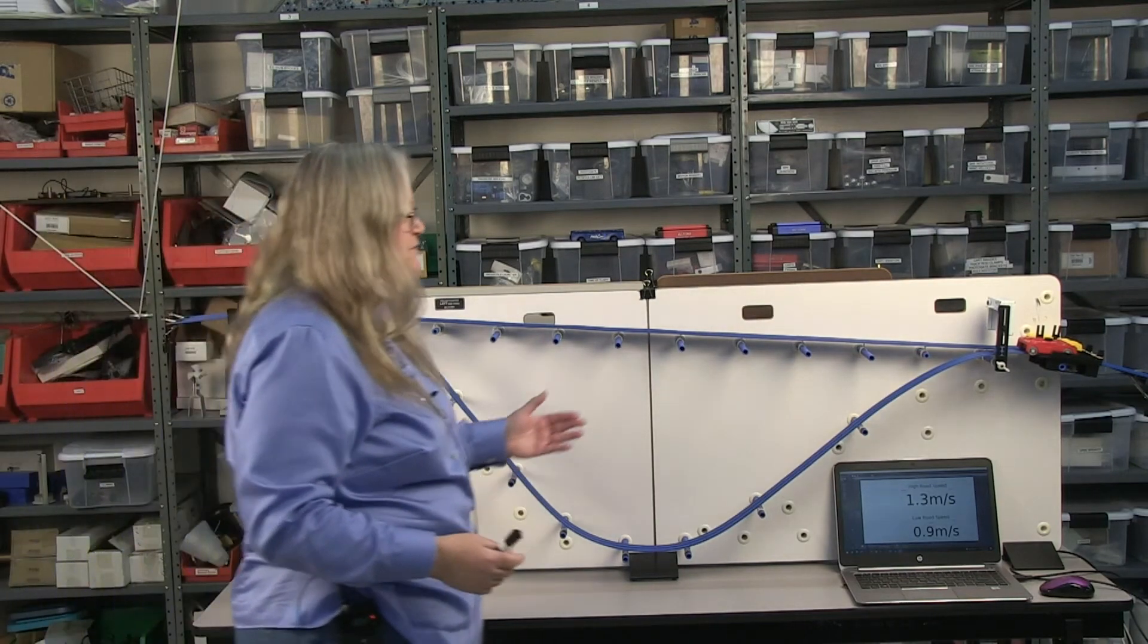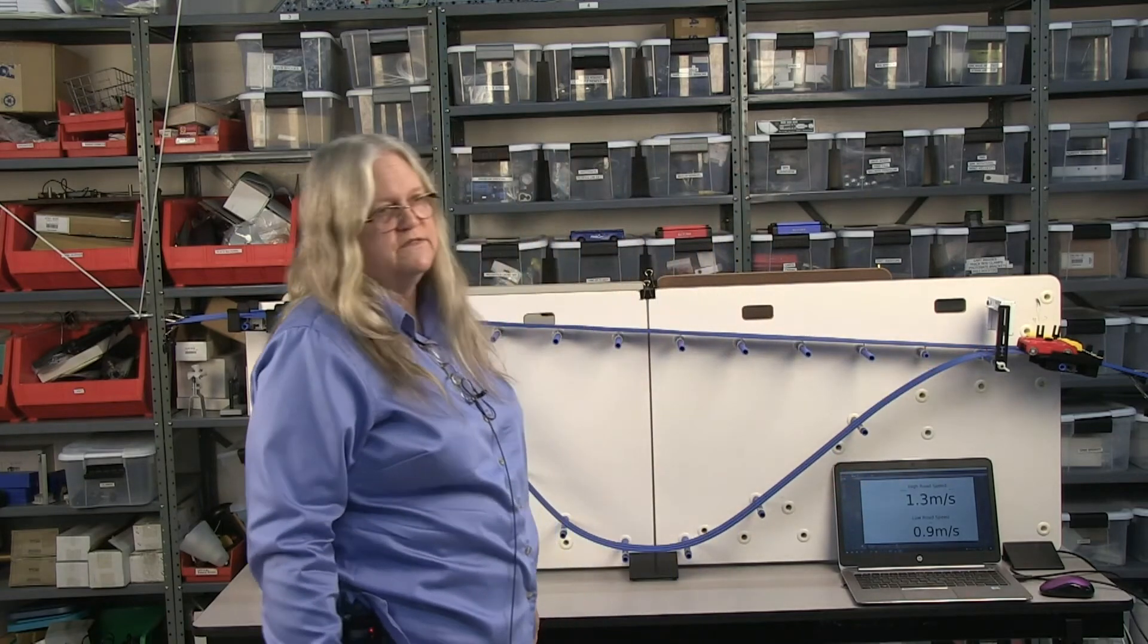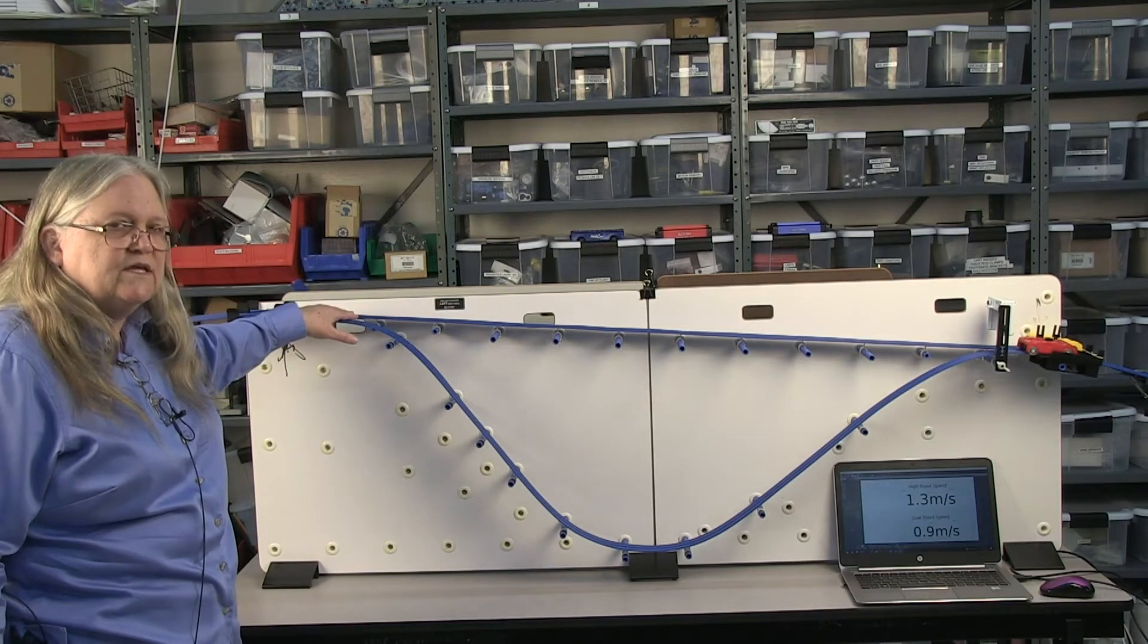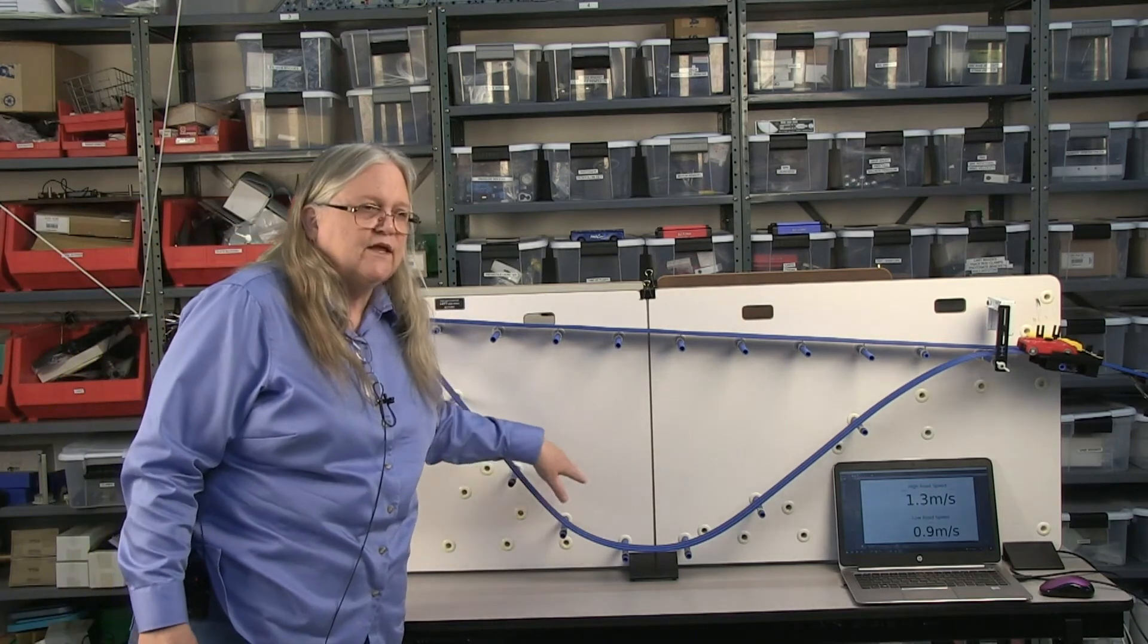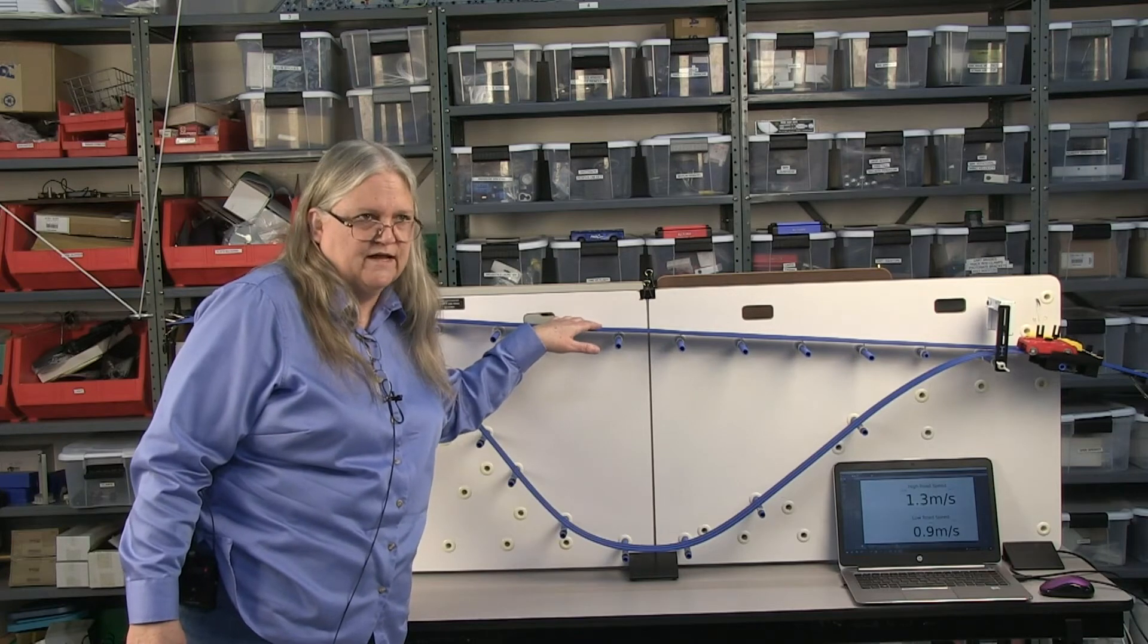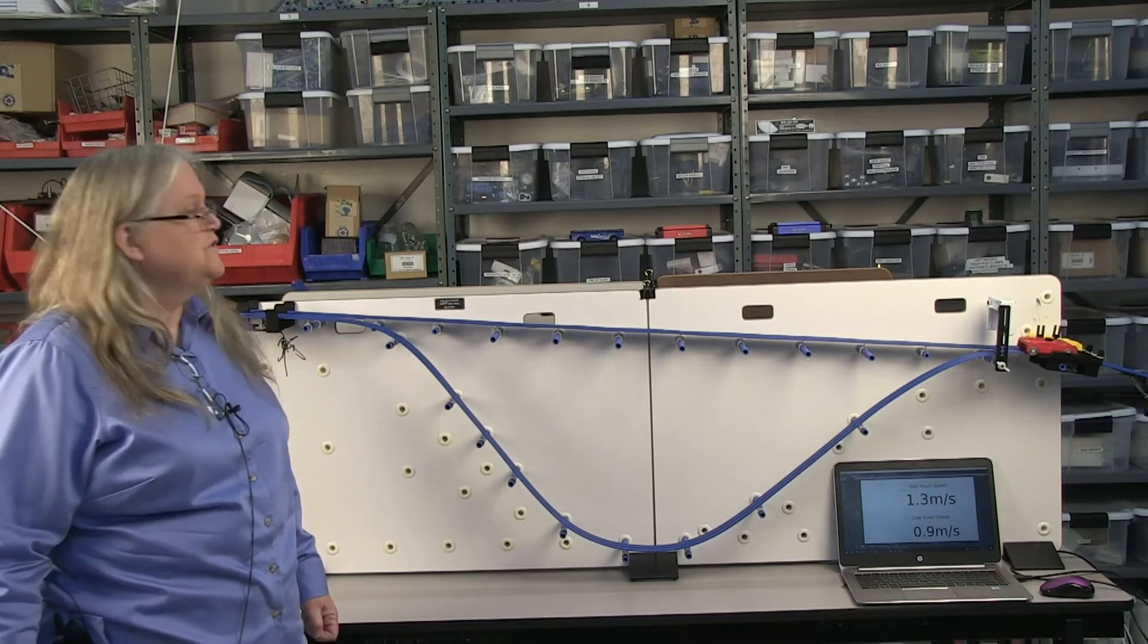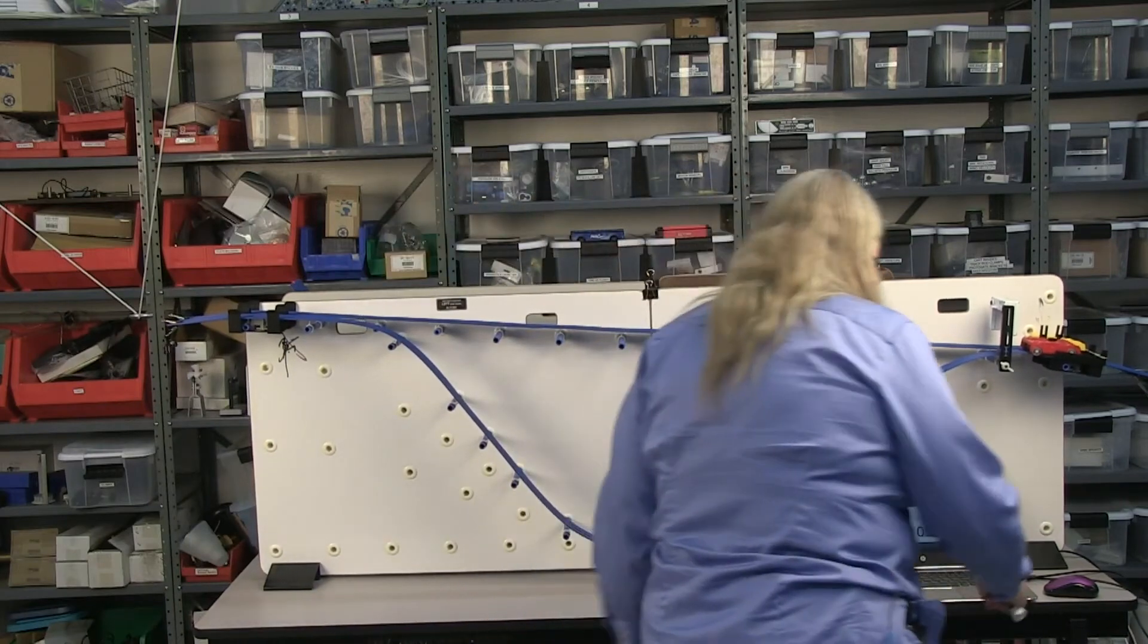So in theory this should be the same speed, but they're not because theory doesn't apply to friction in this case. The energy really isn't conserved here. The cart that's going down here and back up is encountering a lot more friction than the one that goes straight down. So in the end, even though it's the winner, it has the lower speed.